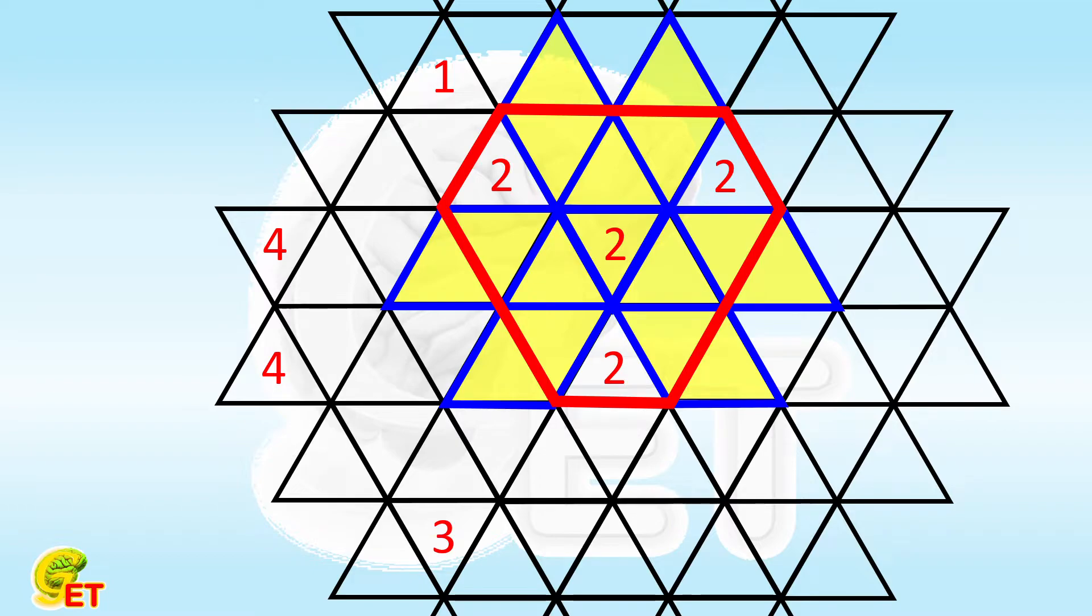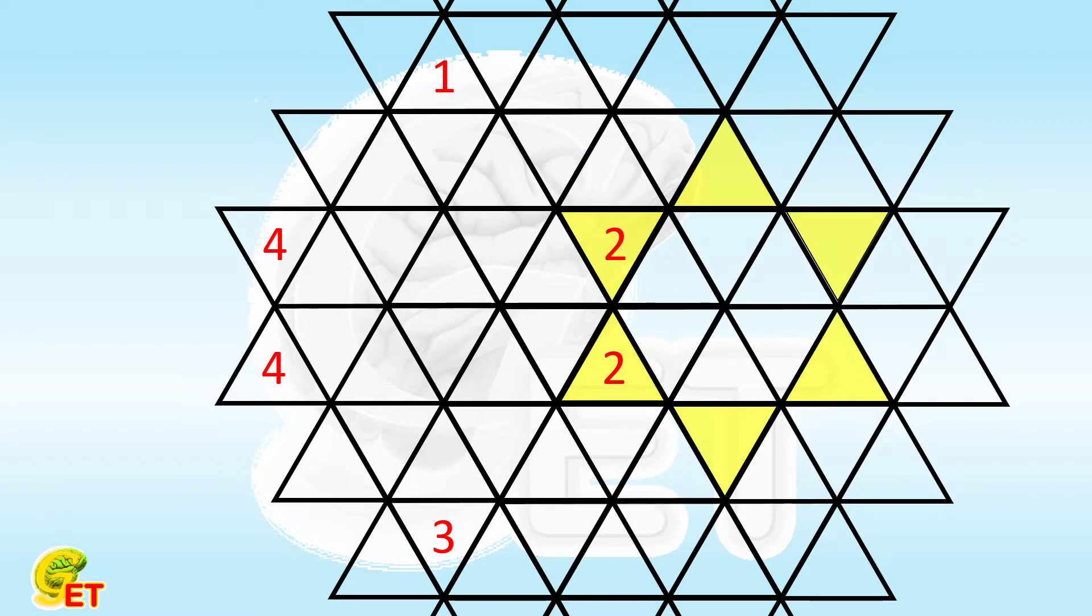As a result, number 2 must be filled into those small triangles that are opposite to the small triangle where the original 2 is. If we start with a number 2 and mark all the small triangles that are connected in such a manner, we get the following pattern.